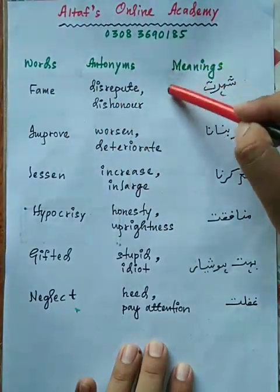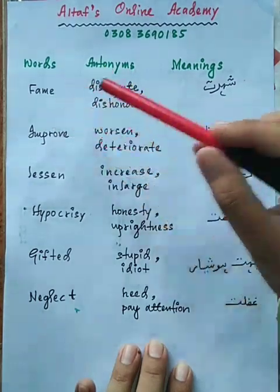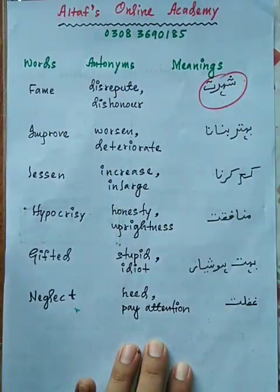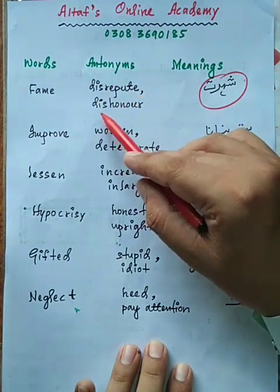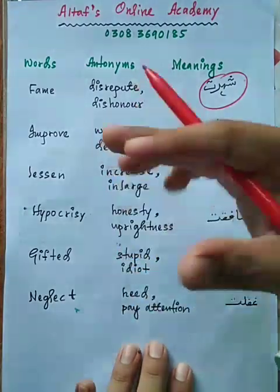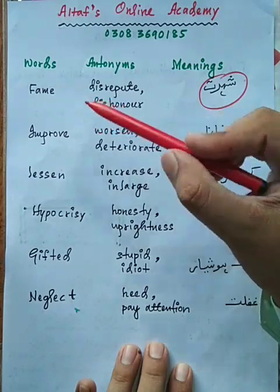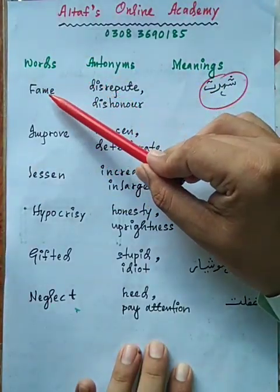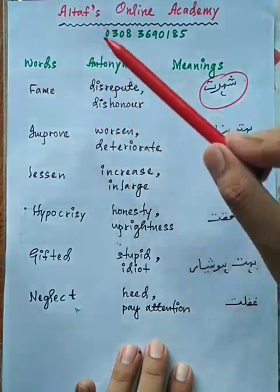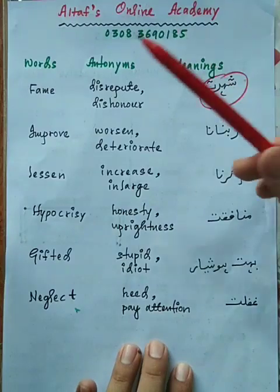Pehla word hai 'fame'. Fame ki meaning hai 'shohrat' — jaise koi insaan shohrat ke aala darje par pahunch gaya. Shohrat ka jo opposite meaning word hai, ya antonym hai, woh hai 'disrepute' ya 'dishonor'. IBA reading comprehension mein ek passage dega jisme 'fame' likha hoga, aur neeche aapko choose karna hoga between disrepute or dishonor as the context-appropriate opposite.